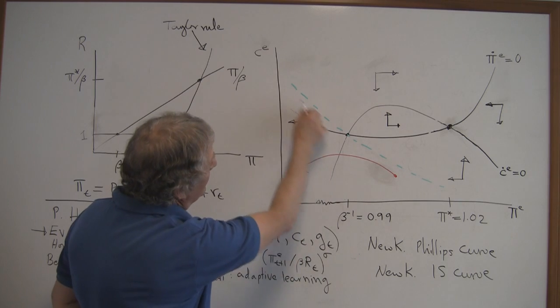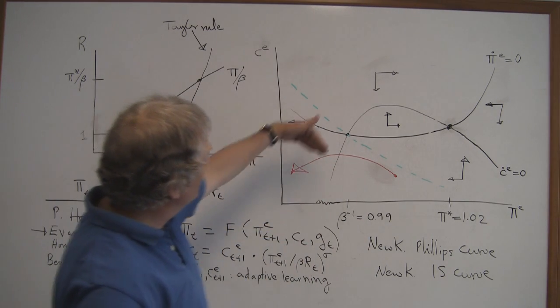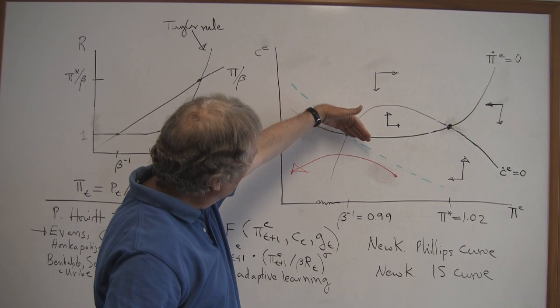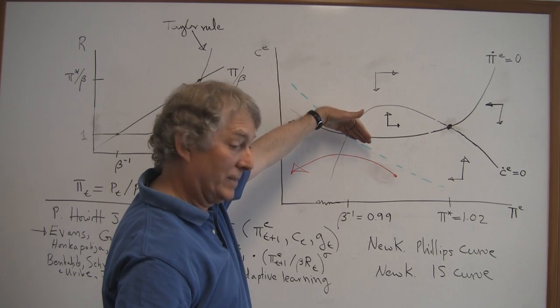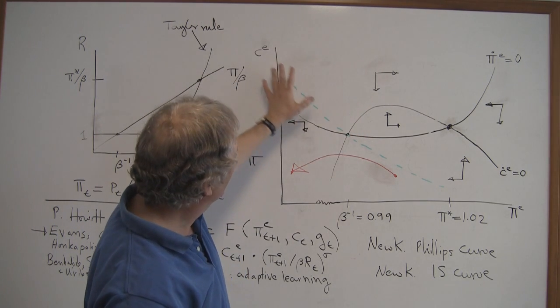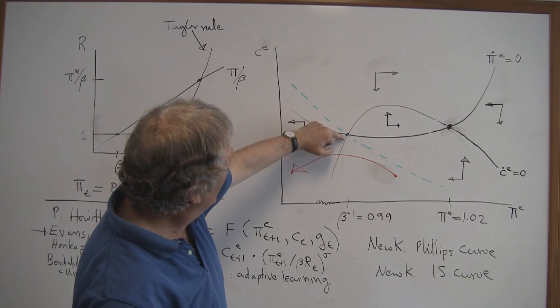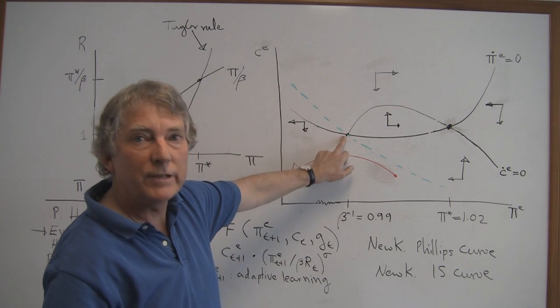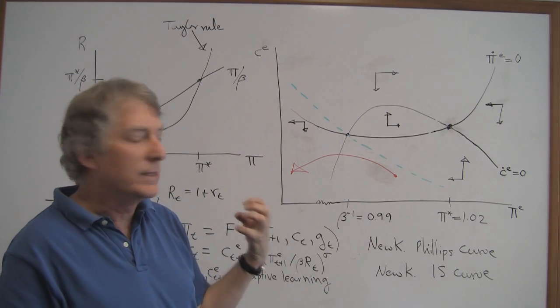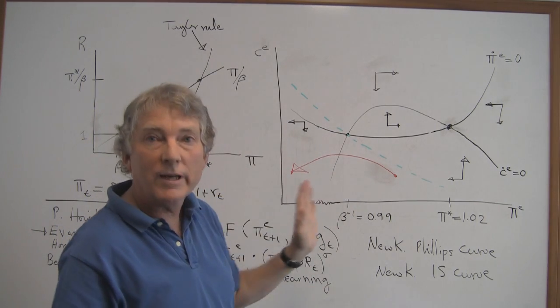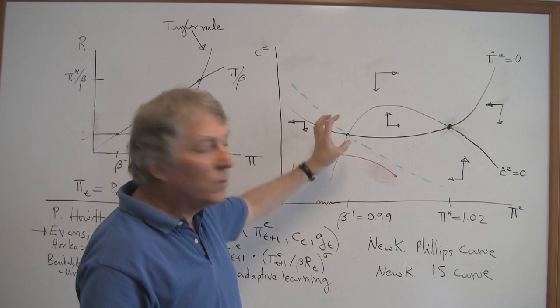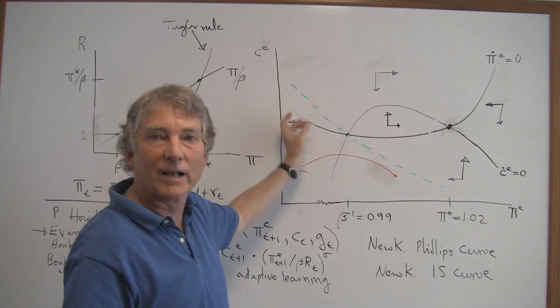And so, this is what we call the deflation trap region. It's demarcated by the points to the southwest of the green dashed line there. In other words, the other equilibrium, the deflation steady state that people have been talking about recently, is locally unstable under learning. It actually takes the form of a saddle.